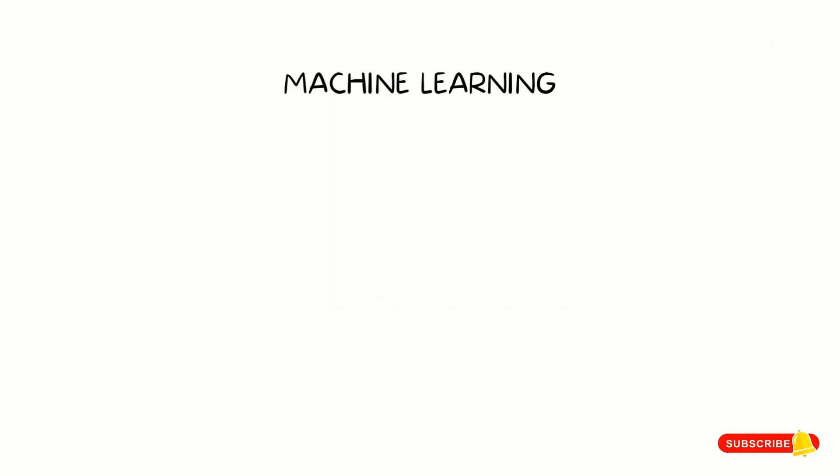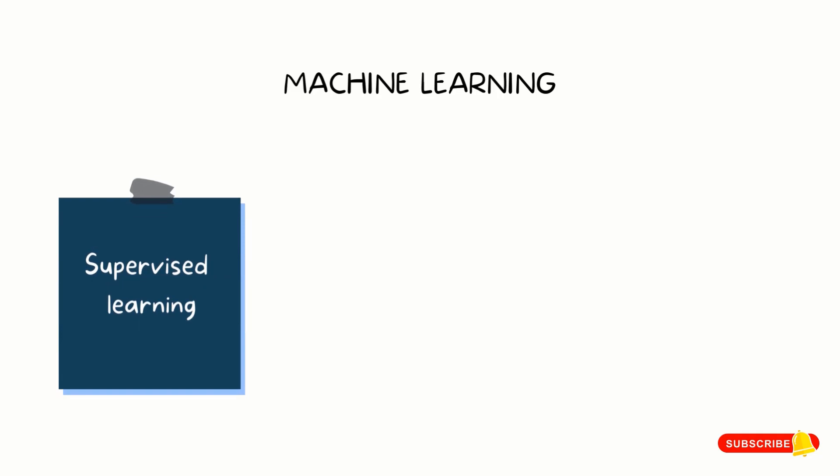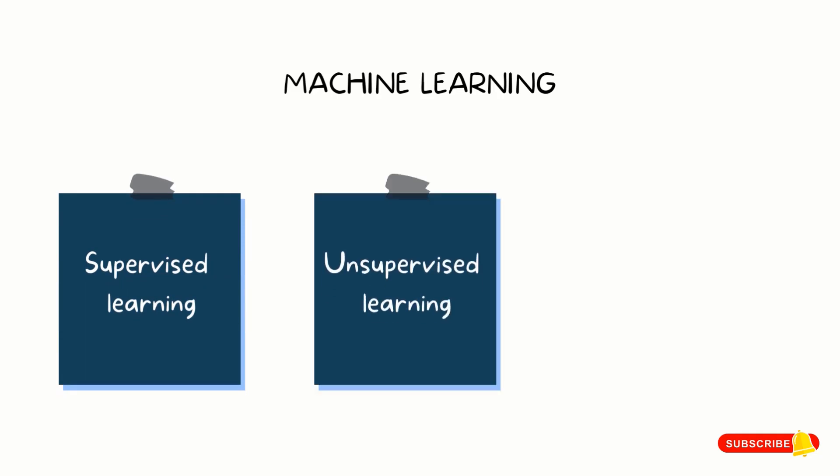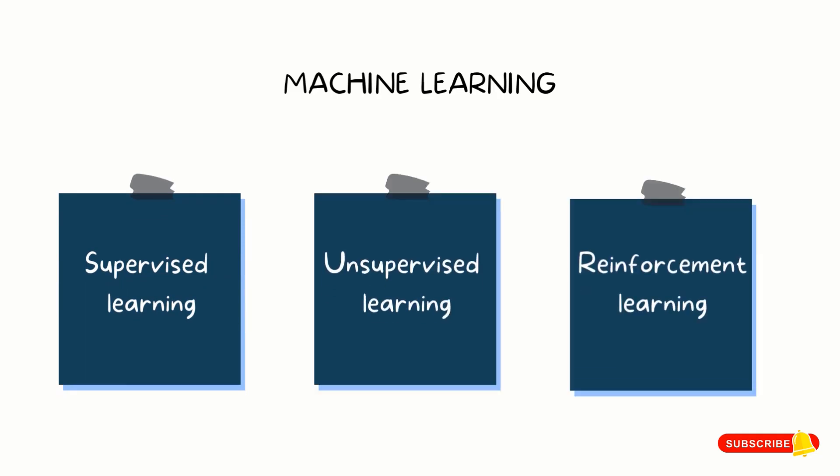There are three ways that a machine can learn: supervised learning, unsupervised learning, and reinforcement learning.